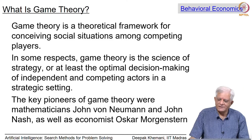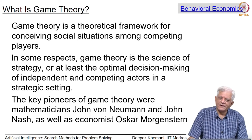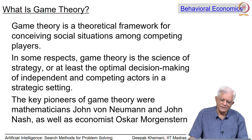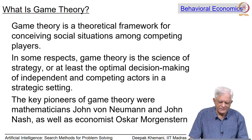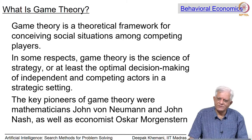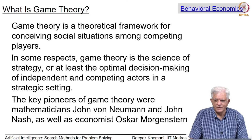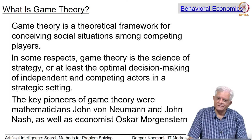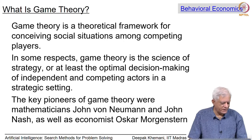Game theory is credited to John von Neumann, who amongst many other things gave us the stored program computer model and sequential model for computing. He is also credited with originating the field of game theory along with John Nash — whom you may have heard about, especially if you have seen the film 'A Beautiful Mind' — and the economist Oskar Morgenstern. As you can see, players from different communities have contributed to this field of game theory.